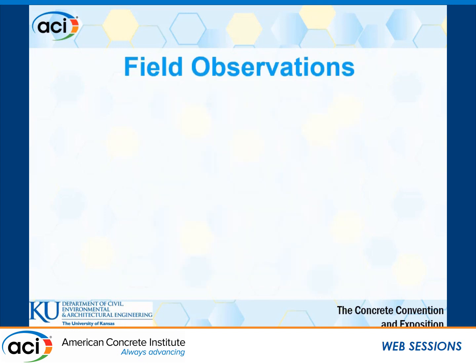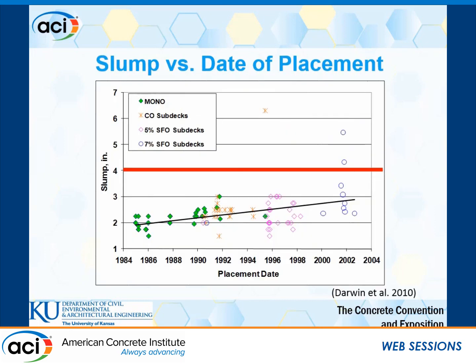With that background, I want to talk about some field observations we have made over the past decade regarding settlement cracking. The first is slump — how slump changed in the concrete industry over the years. Here are bridges involved in our study in the state of Kansas. The average slump of each bridge is listed as a function of construction date. For bridges built between 1984 and 2004, the average slump increased very slightly over 20 years, and we barely had any bridge with four-inch or higher slump.